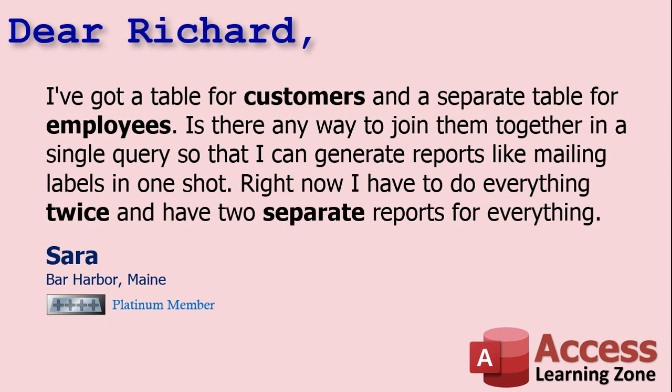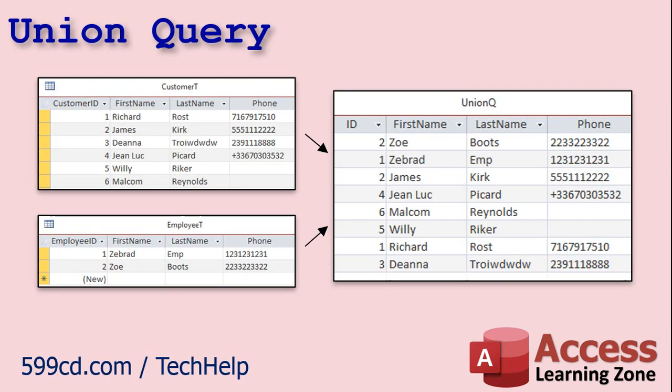We're not going to use the word join. Join is a special database term that we use to join related tables together — for example, customers and orders, so you can see all the orders with the customer details. We're going to combine two tables: the customers with the employees. I've got six customers and two employees, and we're going to combine those together into one query — a union query — and we'll have eight total records.